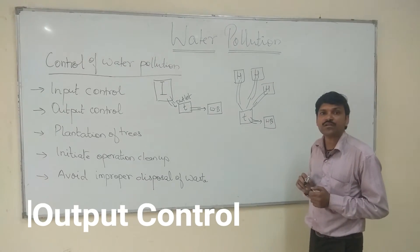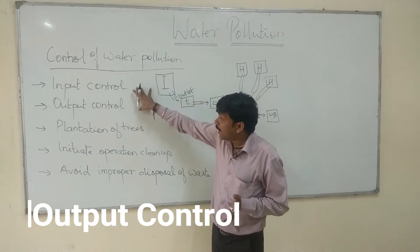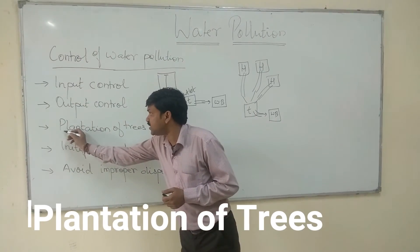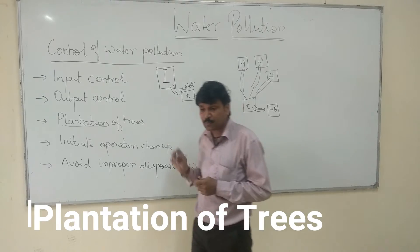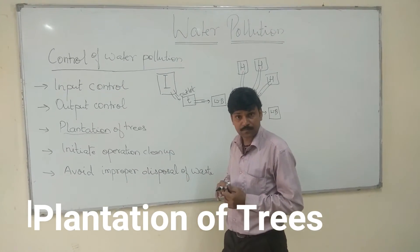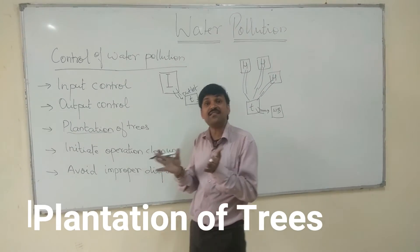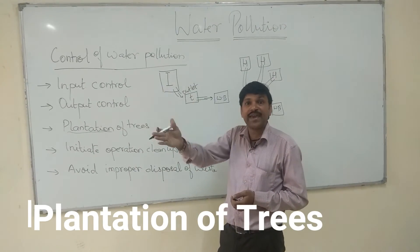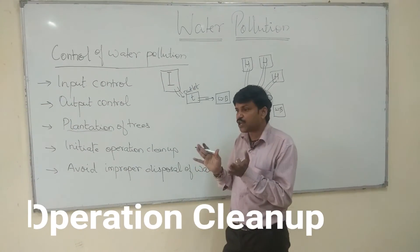After treatment, the water is either reused or disposed of in nearby water bodies. These are technical control methods. The third method is to plant more and more trees. Plantation of trees is very important because this technique easily minimizes the diffuse sources of water pollution. When you plant more trees, the flow of waste gets hindered due to the availability of plants, which create some blockage in the flow of waste material.